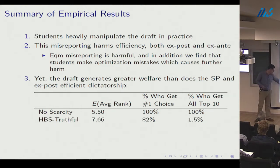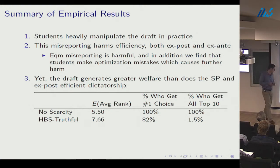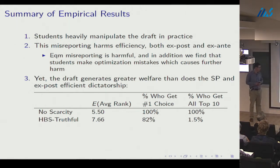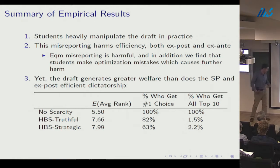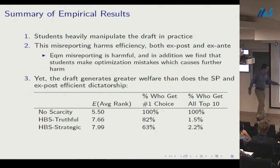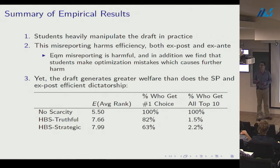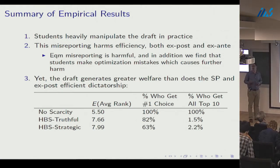With genuine scarcity, under truthful play, average rank is 7.66 and 82% of students get their number one choice. Under strategic play, average rank rises to 7.99 and only 63% get their number one choice — though the percentage getting their bliss point actually increases slightly, for students who mostly like unpopular courses but strategically misreport to capture the few popular ones they want.